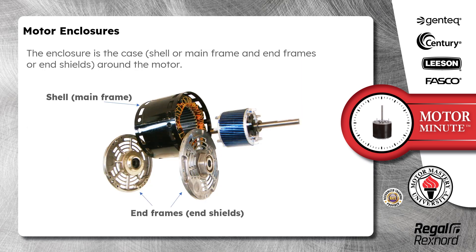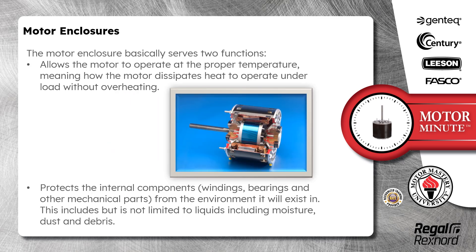The enclosure is the case, shell or mainframe, and end frames or end shields around the motor. The motor enclosure basically serves two functions: allows the motor to operate at the proper temperature, meaning how the motor dissipates heat to operate under load without overheating, and protects the internal components, windings, bearings, and other mechanical parts from the environment it will exist in.